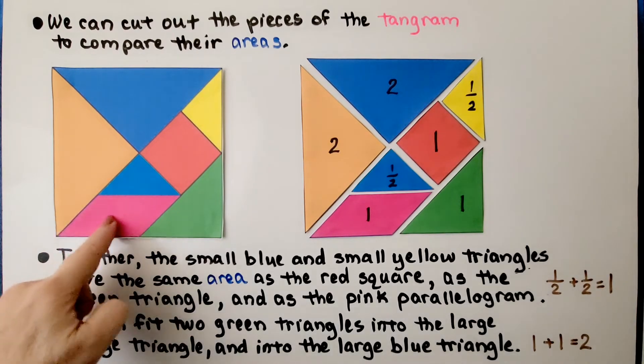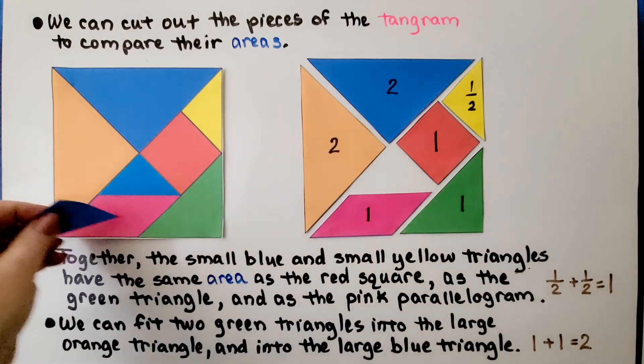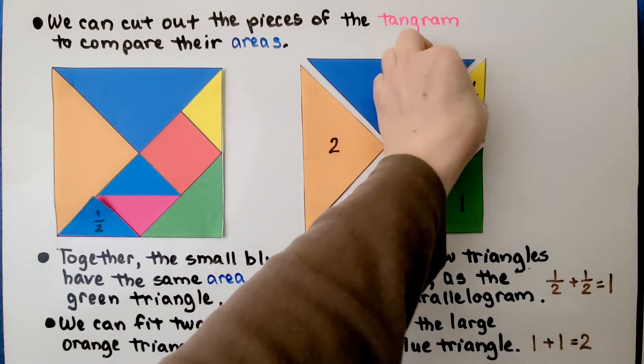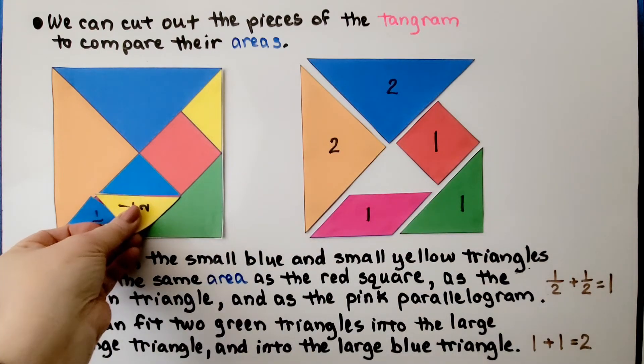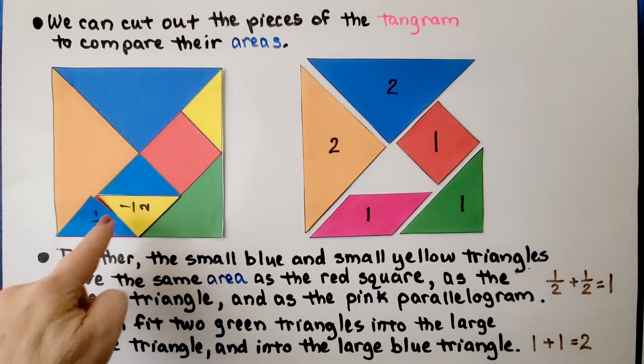They also have the same area as this pink parallelogram. We can take the blue triangle and put it here. We can take the yellow triangle and put it like this, and it has the same area as the pink parallelogram.